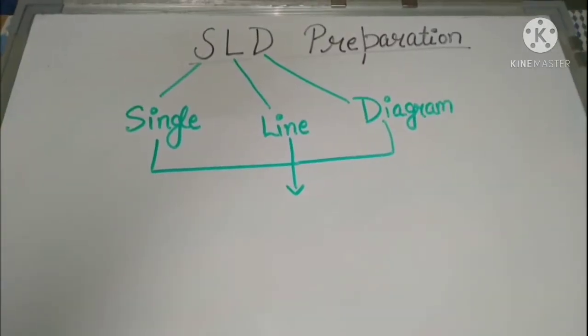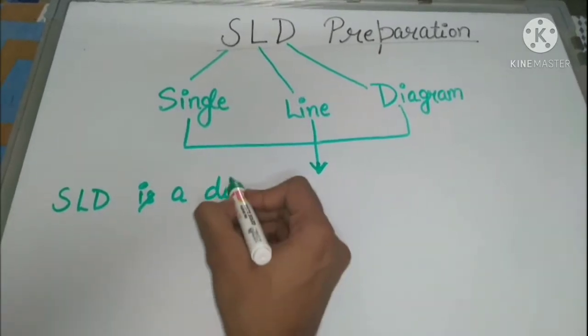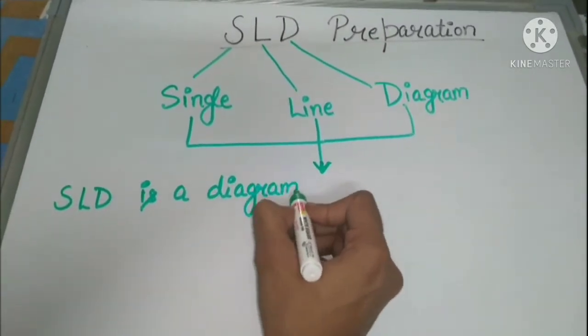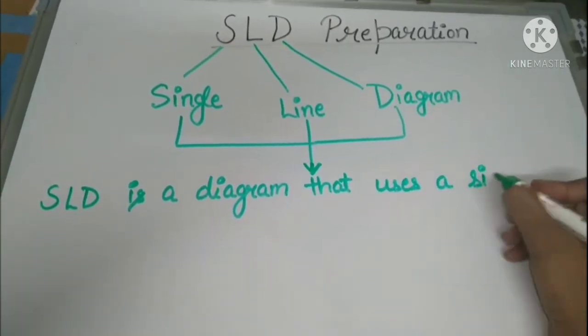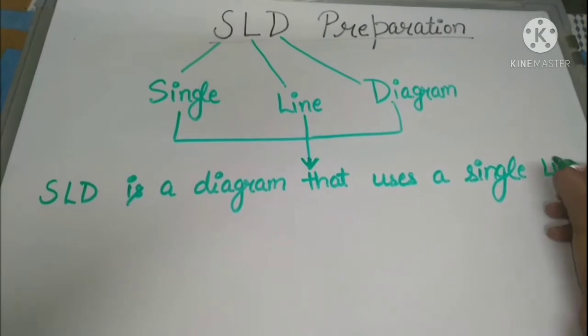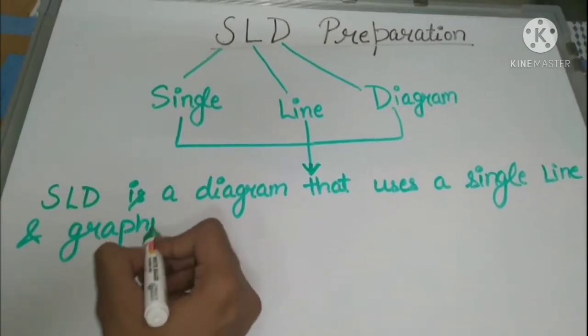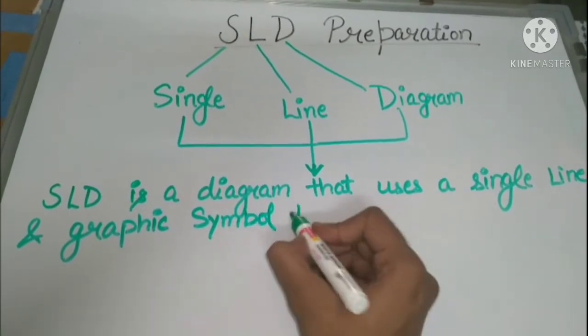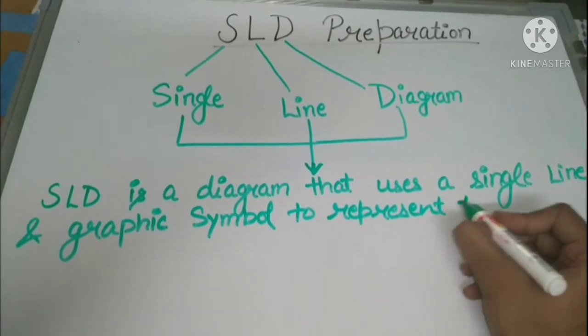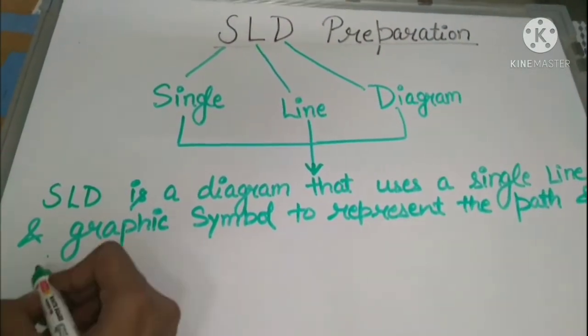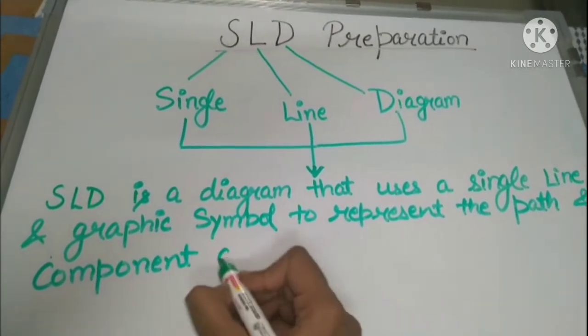Let's talk about the definition of SLD. SLD is a diagram that uses a single line and graphic symbol to represent the path and component of an electric circuit.